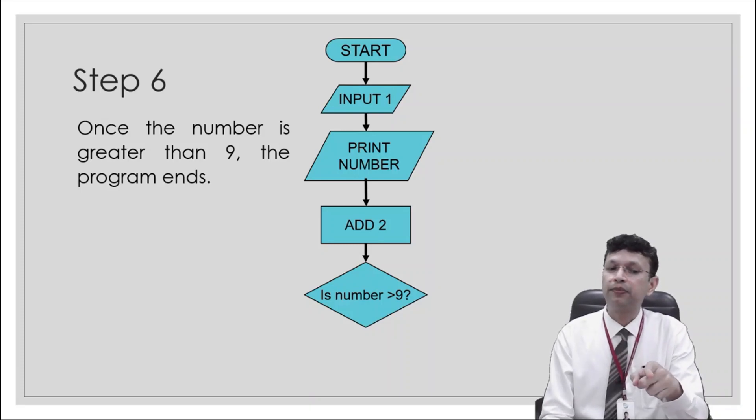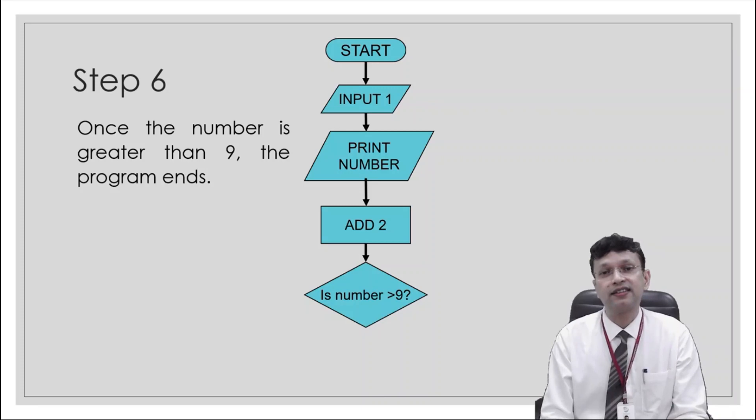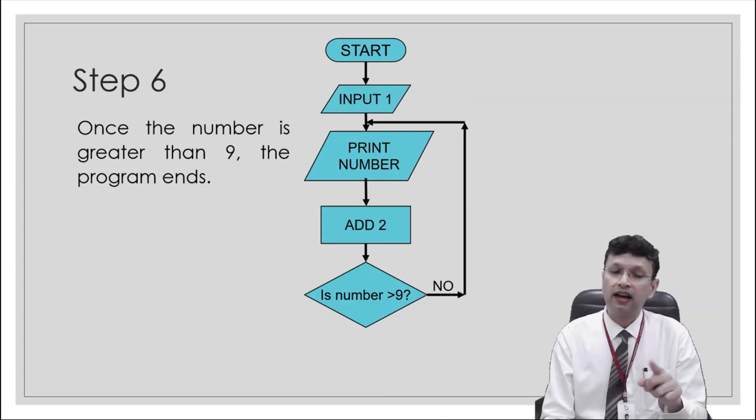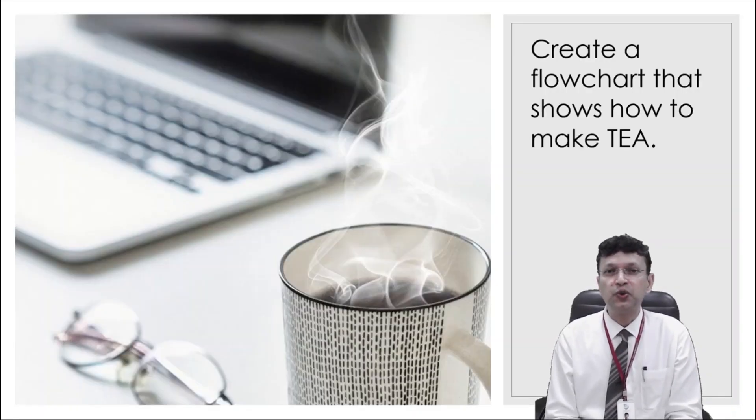So again, when we have reached the print number, again, we'll do what? After print number, we'll add 2. So now 3 becomes 5. We'll test whether 5 is greater than 9. No, it is not greater than 9. So the control goes back. And again, 5 is printed. Now this process will continue again and again until it reaches 9. 9 is printed, 9 plus 2 is 11 and then 11 is greater than 9. So it will say, yes, it is greater than 9. We'll add an end at the end. Now that you know how to make flowcharts, it's time for you to create a flowchart that shows how to make tea. Happy learning.